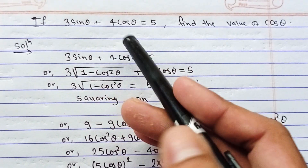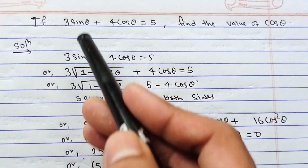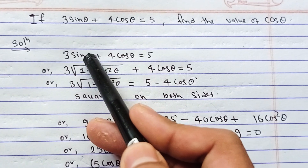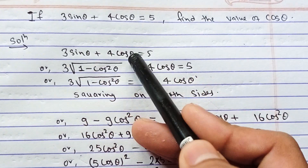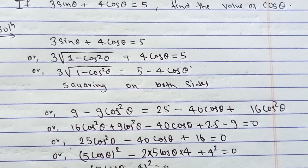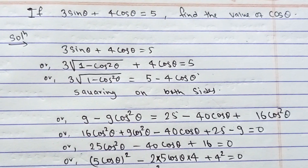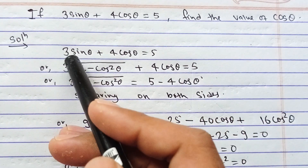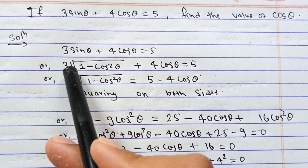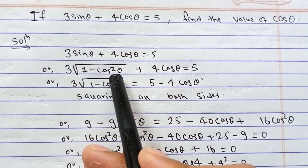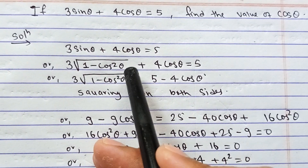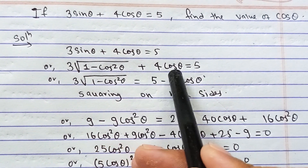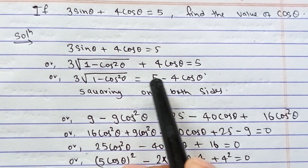We need to change sin θ in terms of cos θ, because we need to find the value of cos θ. So sin θ can be written as √(1 - cos²θ). After doing this, the 4 cos θ term is transposed to the other side.